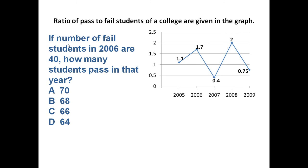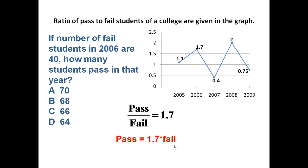The first question: if the number of fail students in 2006 is 40, how many students passed that year? The pass-to-fail ratio in 2006 is 1.7, so pass equals 1.7 multiplied by fail. Since fail students are 40, pass equals 1.7 into 40, which equals 68. So in 2006, total 68 students passed and 40 students failed.